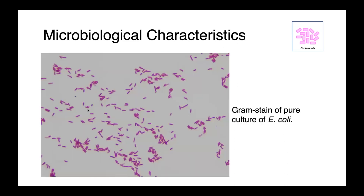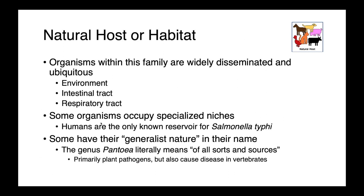Proteus mirabilis also has a distinctive smell, so whenever we open up our incubators we always know if we have Proteus swarming. Here we have a Gram stain of a pure culture of E. coli, and you can see these nice gram-negative, or pink, rods. Organisms within this family, and actually within the entire order Enterobacteriales, are widely disseminated and ubiquitous.